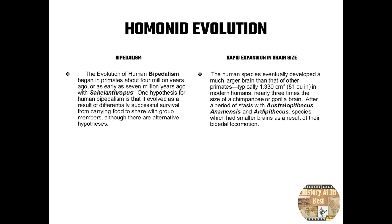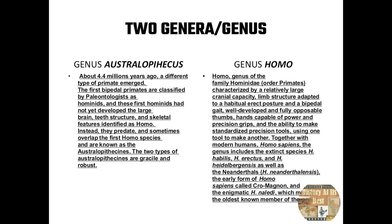Rapid brain expansion was also a result of bipedal locomotion because free hands allowed humans to use them for different works like making stone tools, hunting and gathering, and making food from alternative sources. The human species eventually developed a much larger brain than other primates — typically 1330 cubic centimeters in modern humans, nearly three times the size of a chimpanzee or gorilla brain. This cranial capacity was very important, contrasting with earlier Australopithecus and Ardipithecus species which had smaller brains.